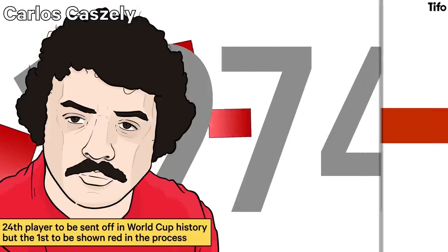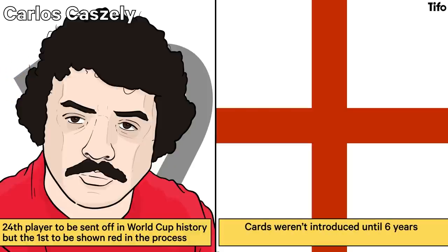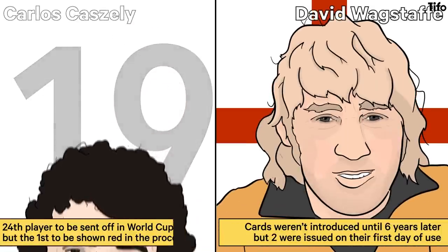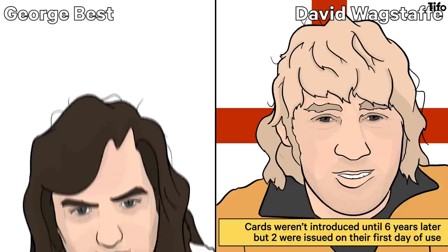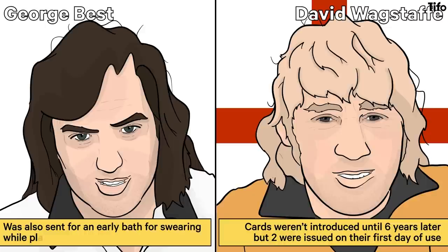Aston's own country, England, were the late converts. The card system wasn't introduced until six years later, but two were issued on their first day of use, on 2 October 1976 — to Blackburn's David Wagstaff, for arguing with a first-half decision, and more famously, the great George Best, then playing for Fulham against Southampton, who was also sent for an early bath for swearing.